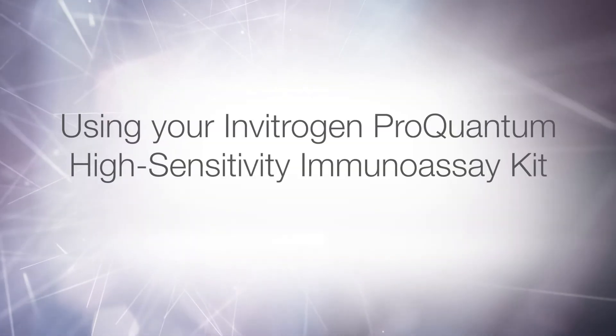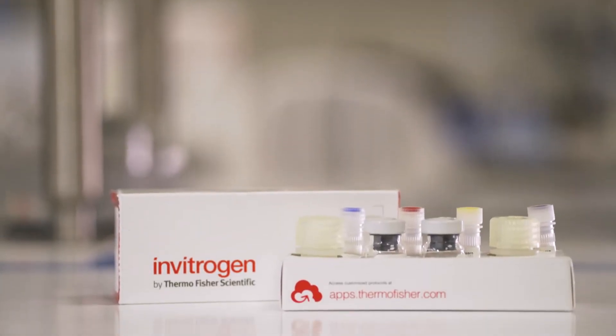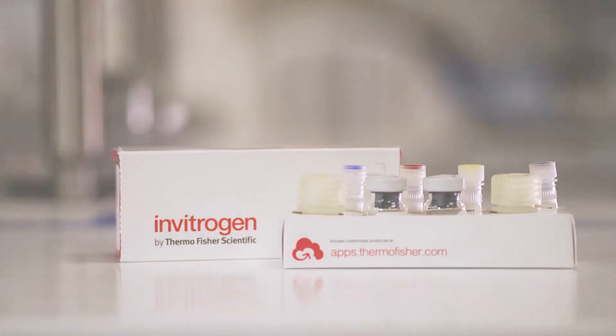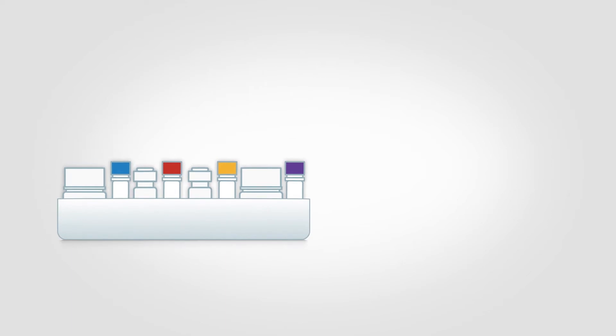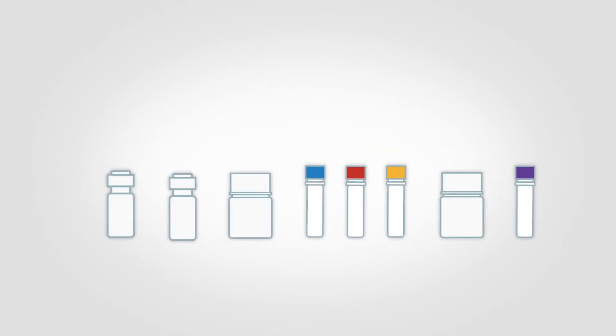Using the Invitrogen ProQuantum High Sensitivity Immunoassay Kit. Let's start with what comes in your kit. Inside the box you'll find eight vials.